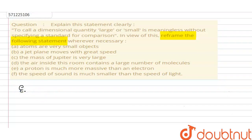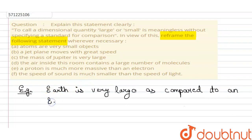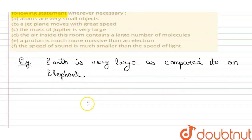Let's understand this statement by an example. Suppose I am saying that earth is very large — as compared to an elephant. So earth is a dimensional quantity and we are saying it is very large as compared to an elephant. We are comparing earth with an elephant, and this statement clearly shows that earth is very large. Similarly, there are 6 statements and we have to reframe these statements.